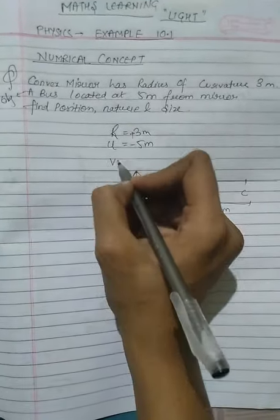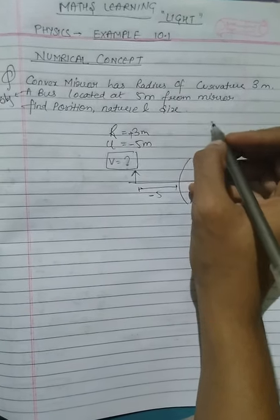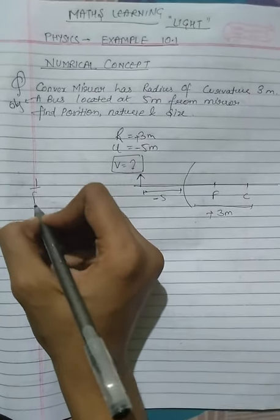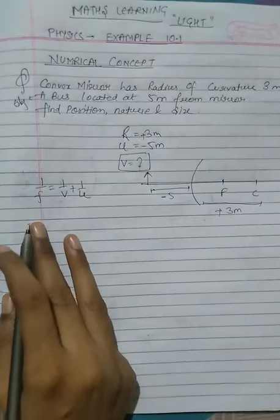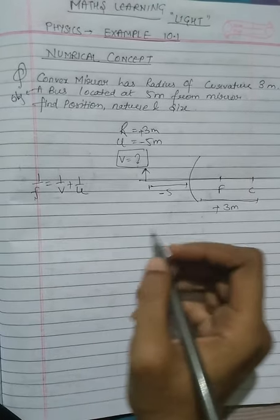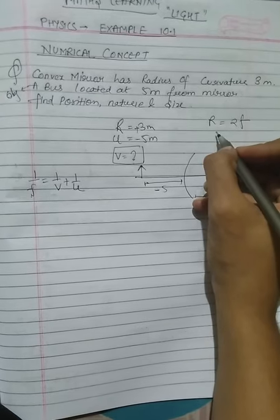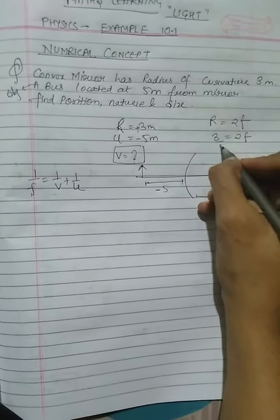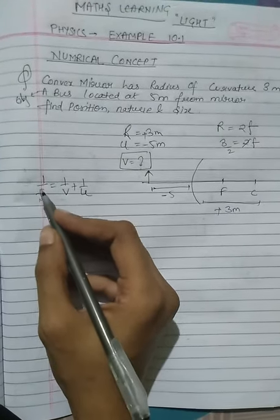Now we start with image position first using mirror formula: 1/f = 1/v + 1/u. How will we start? Everyone knows that r = 2f, so f is 3/2. f is 3/2.